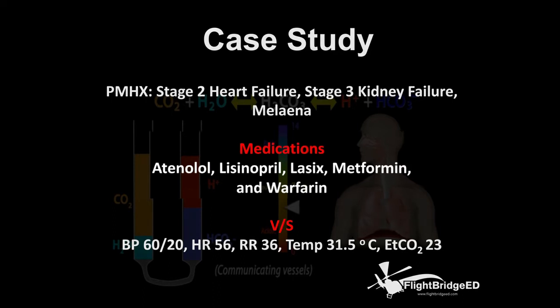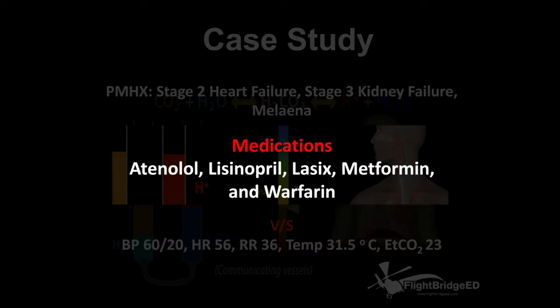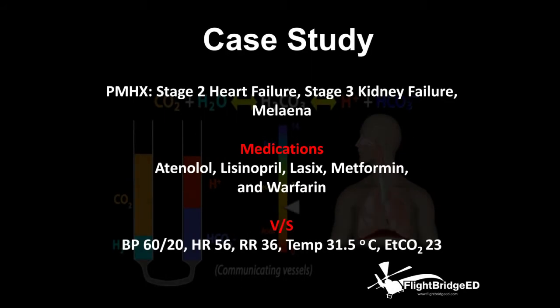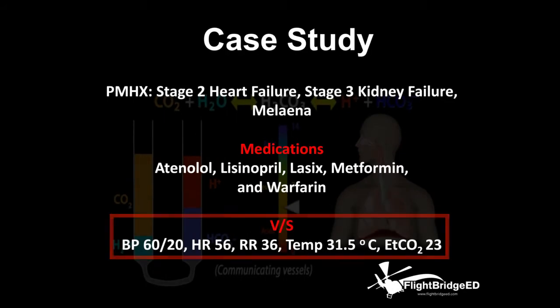He's on a beta blocker, an ACE inhibitor, Lasix, metformin, and warfarin. Hemodynamically, he is very unstable — 60 over 20 on BP, heart rate of 56, respiratory rate of 36, tachypneic. They do a tympanic temperature check and his temp is 31.5 degrees Celsius.